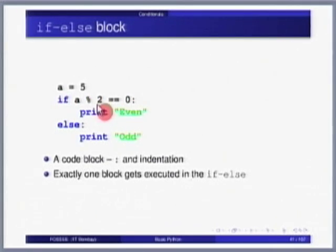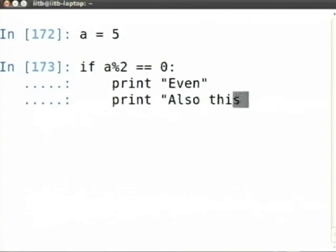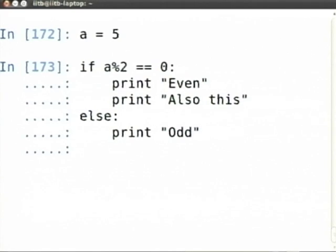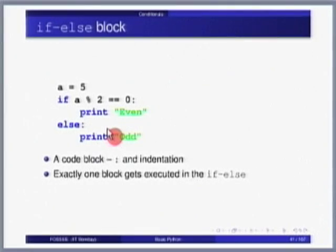So if a percentage 2 is 0, it executes this block, else it executes this block. Very straightforward. So let us try this out. A is 5, and I would suggest you also try it out on your local sessions. Now if I have to go to the else I cannot type else here. Now notice that it is not giving me back the prompt, so you have to enter this twice. Now since a was odd, it said odd it is.